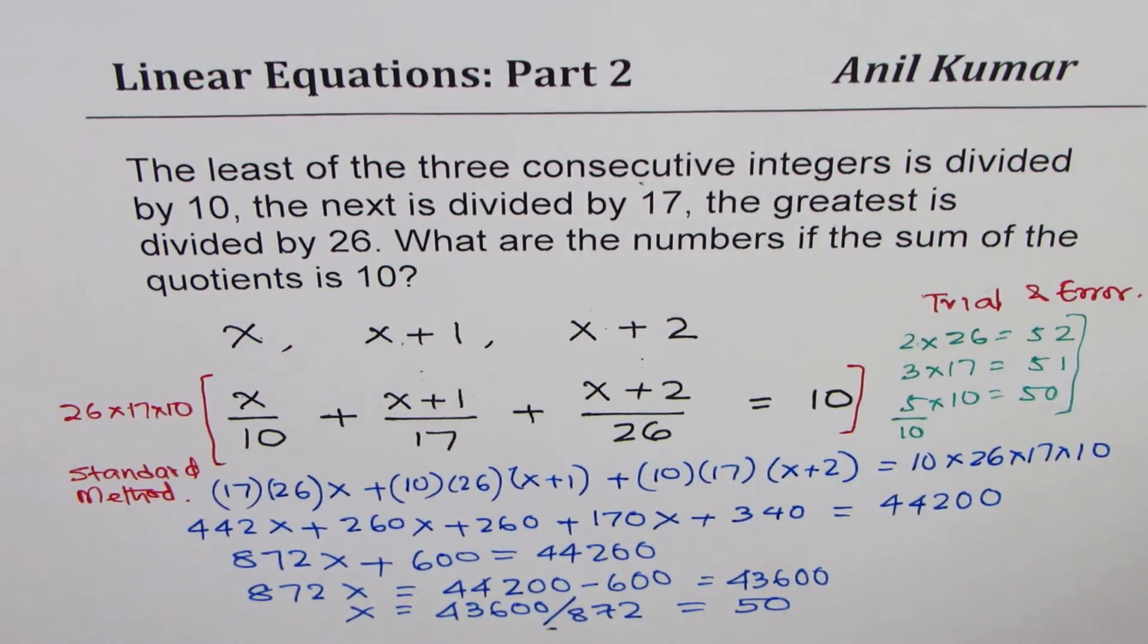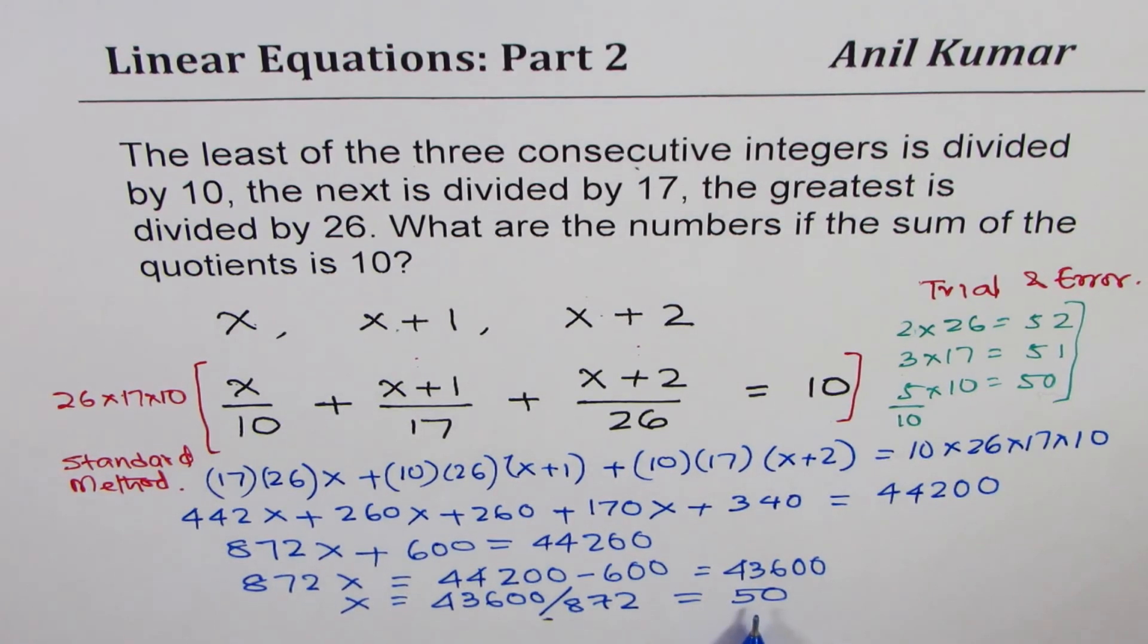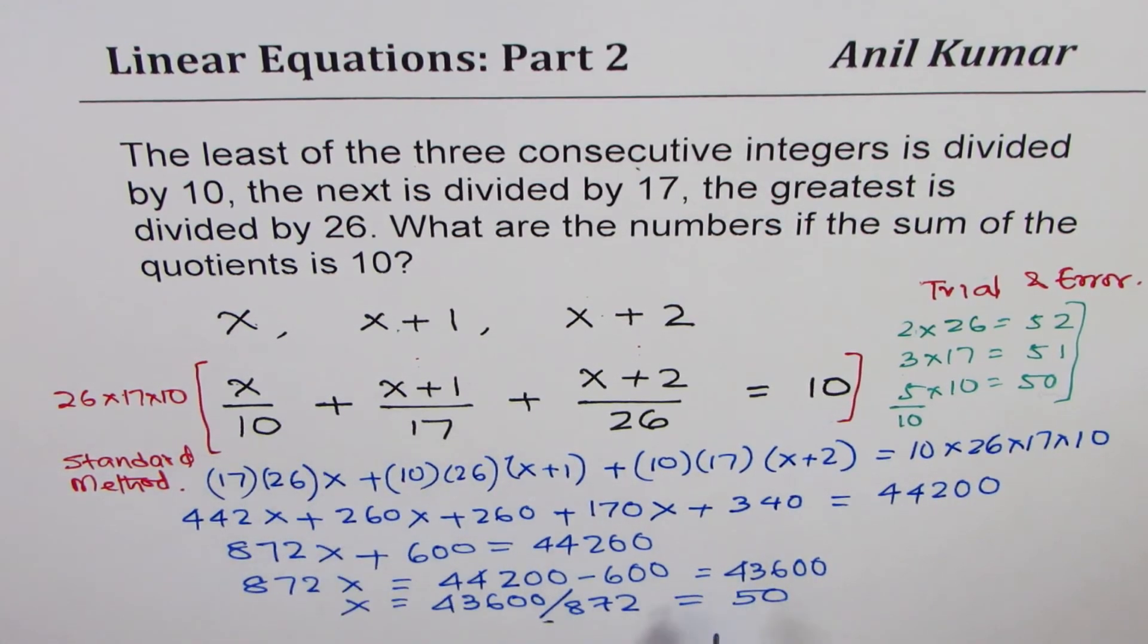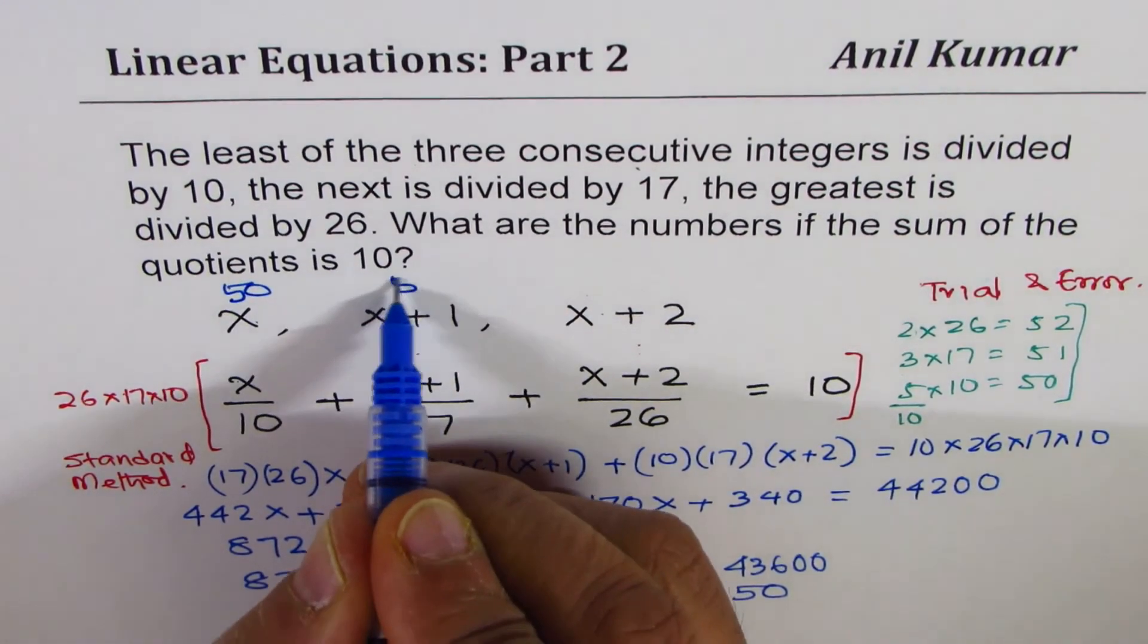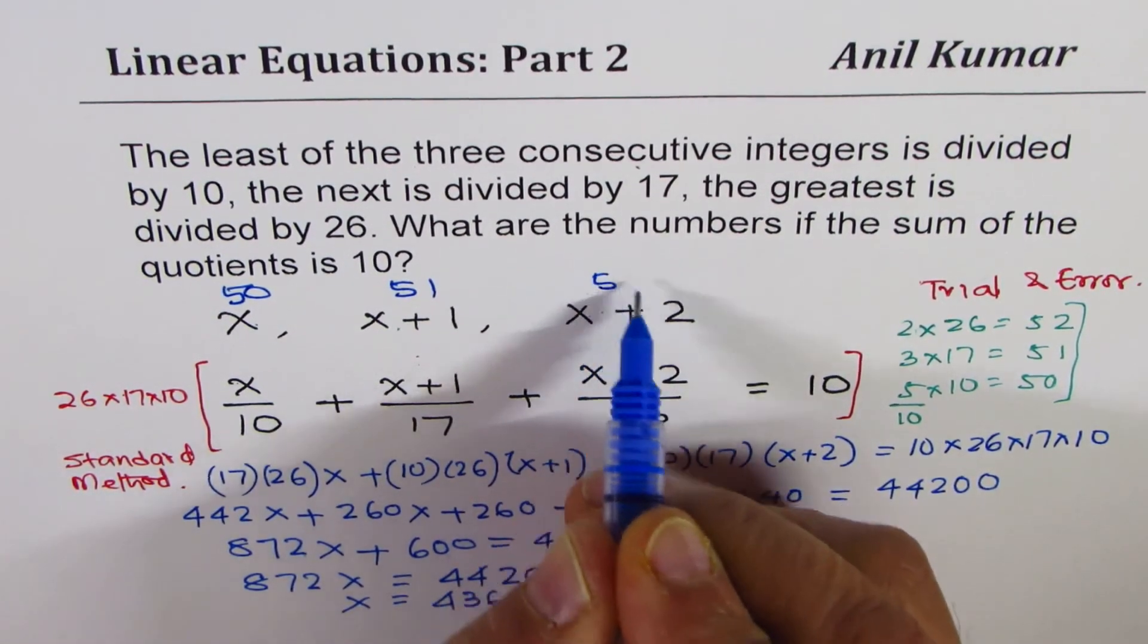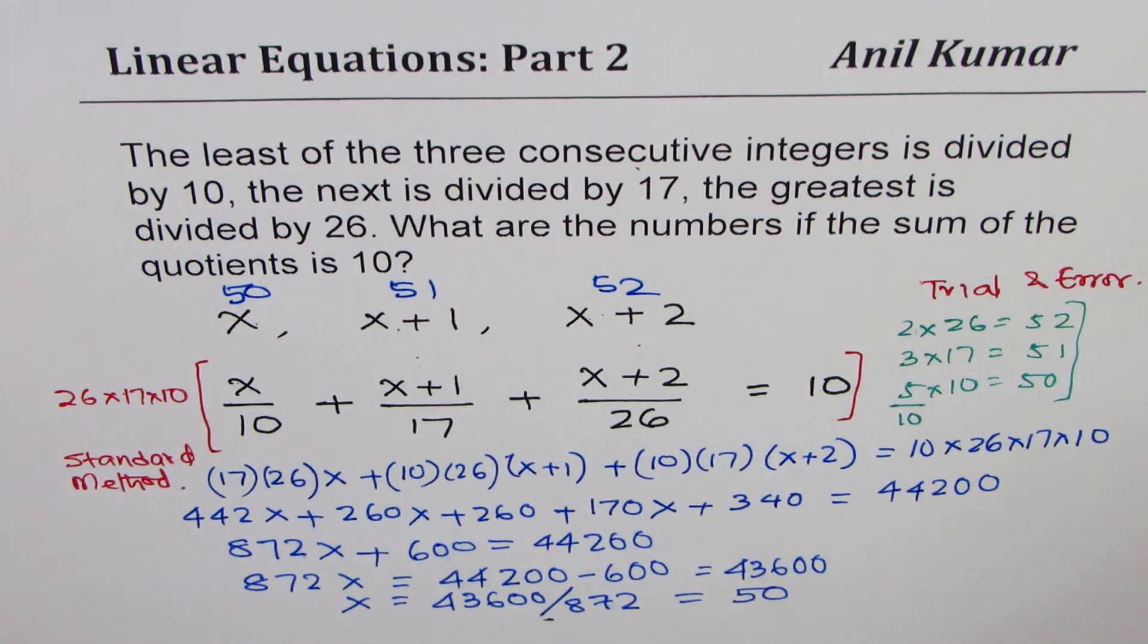So finally, we have to deal with bigger numbers in this case, but we do get the answer following our standard method. So x is 50. So if x is 50, x plus 1 will be 51 and x plus 2 is 52. So that is how you could solve this question.